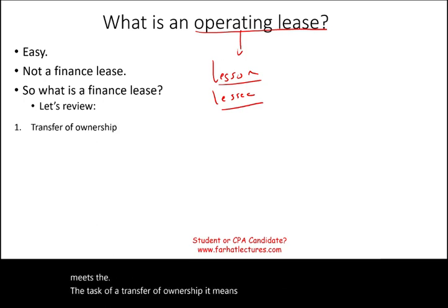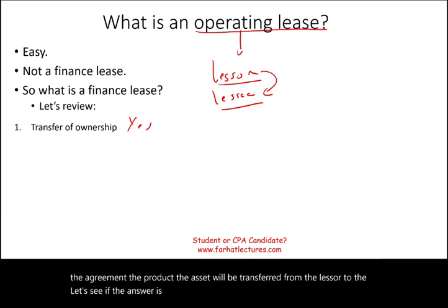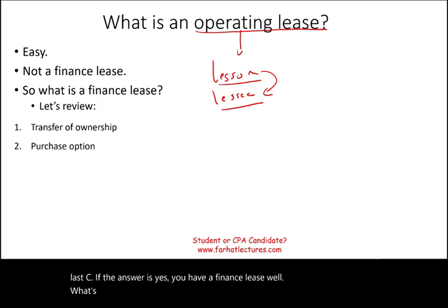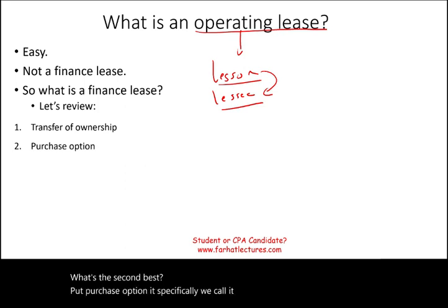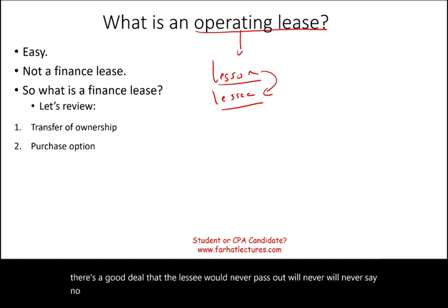Test one: transfer of ownership. If there's an agreement that at the end of the lease the asset will be transferred from the lessor to the lessee, you have a finance lease. Test two: bargain purchase option. If there's a deal the lessee would never pass up — a purchase option — then we have a finance lease.